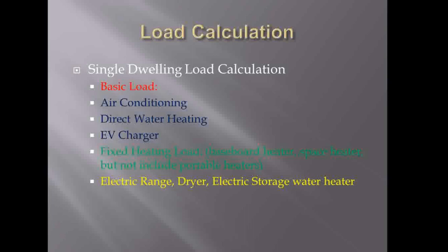For a single dwelling, the load calculation includes several parts. The first, shown in red, is the basic load. The second, third, and fourth are air conditioning, direct water heating, and the EV charger. After that is the fixed heating load, like a baseboard heater or space heater. The last is the electric range, dryer, and hot water tank — we call it the additional load.